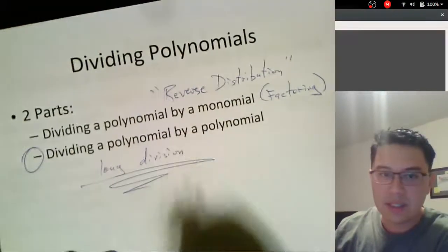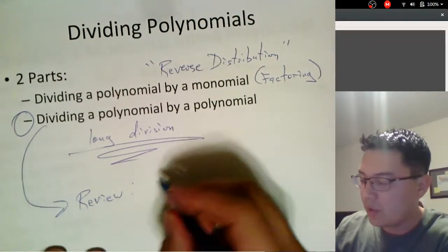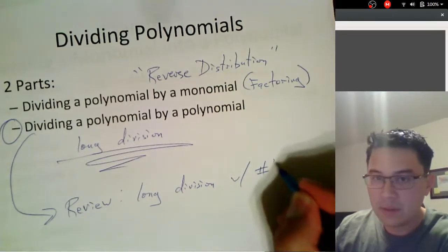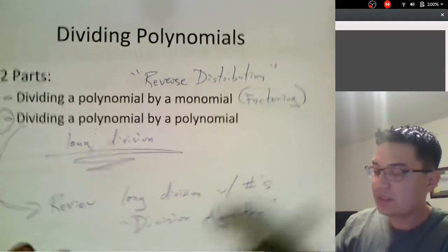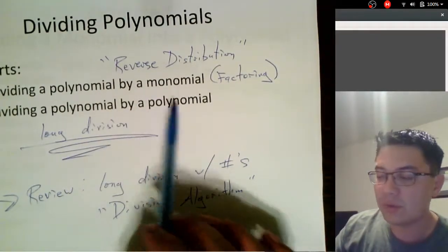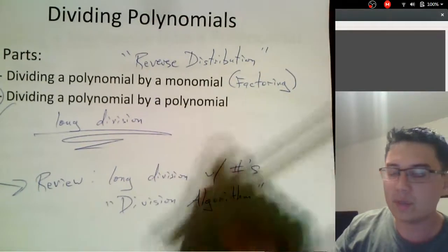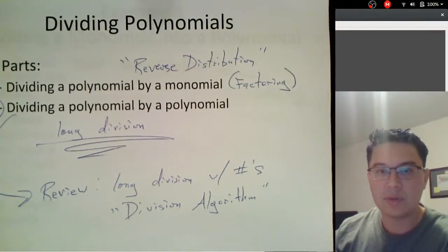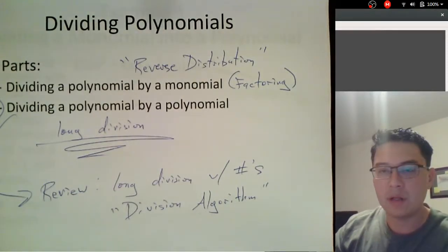I am going to break this part into two parts. The first part is actually a review from middle school or even elementary school — we're going to look at long division with numbers, something you may know as the division algorithm. The process used for dividing a polynomial by a polynomial uses the same steps. So our first day we'll concentrate on doing reverse distribution and factoring, and I'll introduce the division algorithm. Then our second day we'll concentrate exclusively on polynomial by polynomial division.